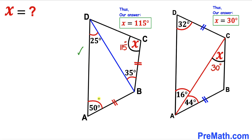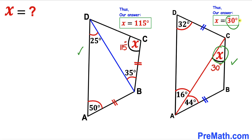In summary: in the first quadrilateral ABCD, angle x turns out to be 115 degrees, whereas in the second quadrilateral ABCD, angle x turns out to be 30 degrees. That's our final answer — thanks for watching and please don't forget to subscribe to my channel for more exciting videos.